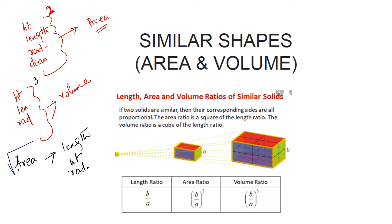The third thing we have studied: if we have been given the volume of two shapes and we are asked to find the unknown length, height, or radius of any one of the figures, we take the cubic root of that value.